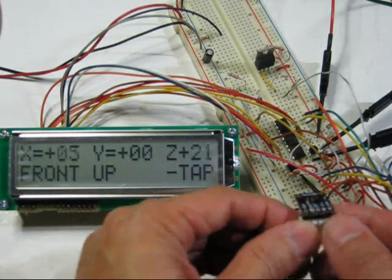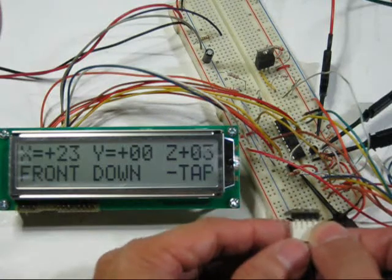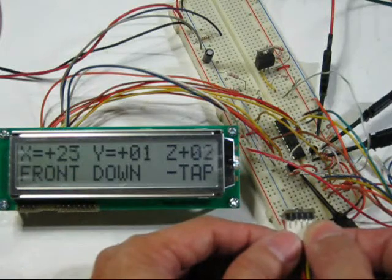And if I turn it this way, it should say positive 1g. Well, it's not that accurate, but it's almost 21, so it's about plus 1g.